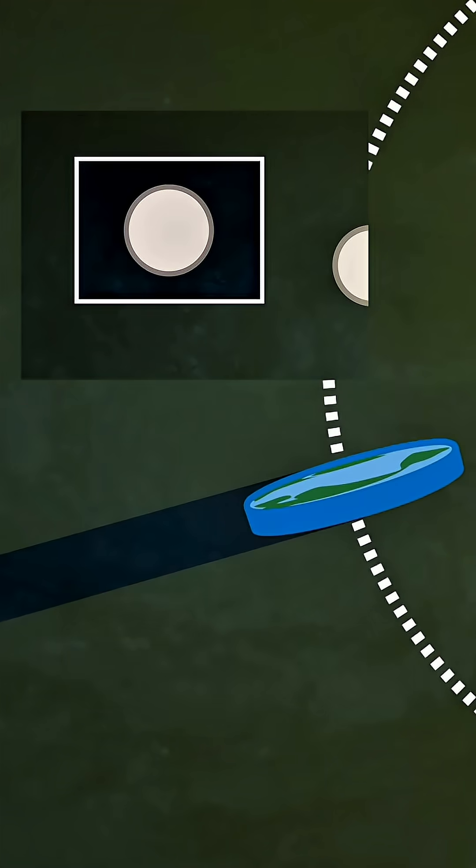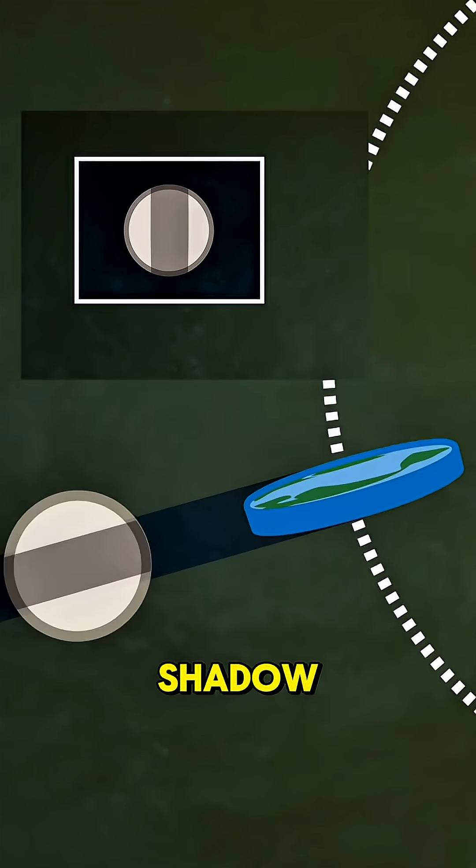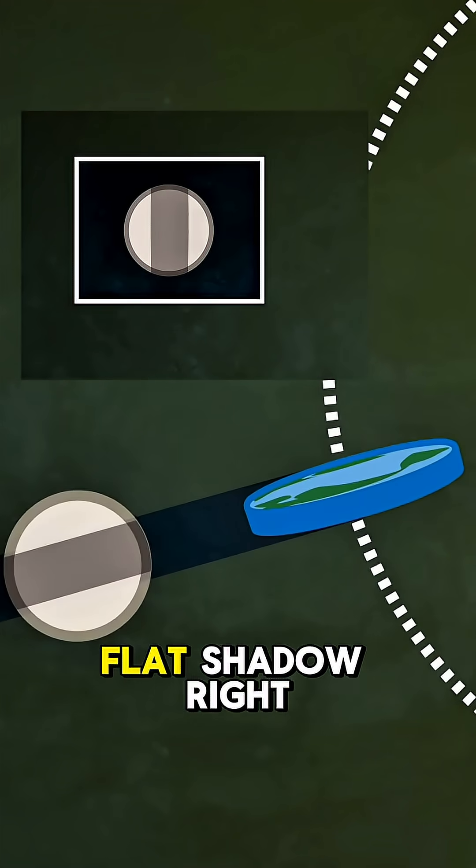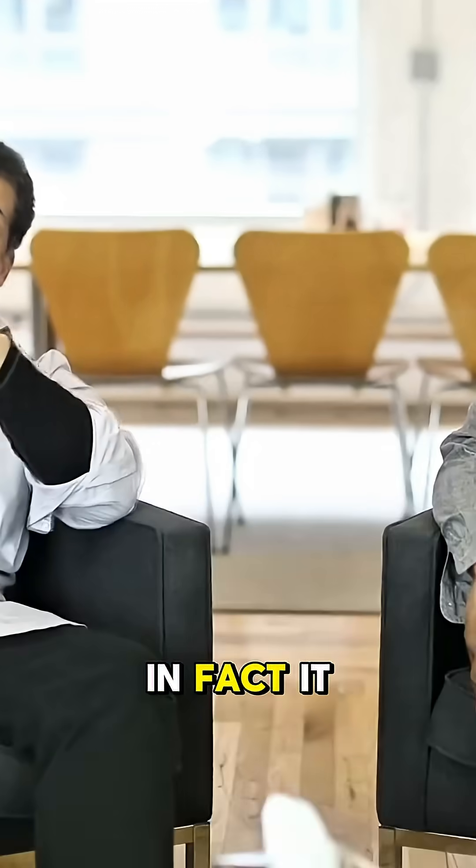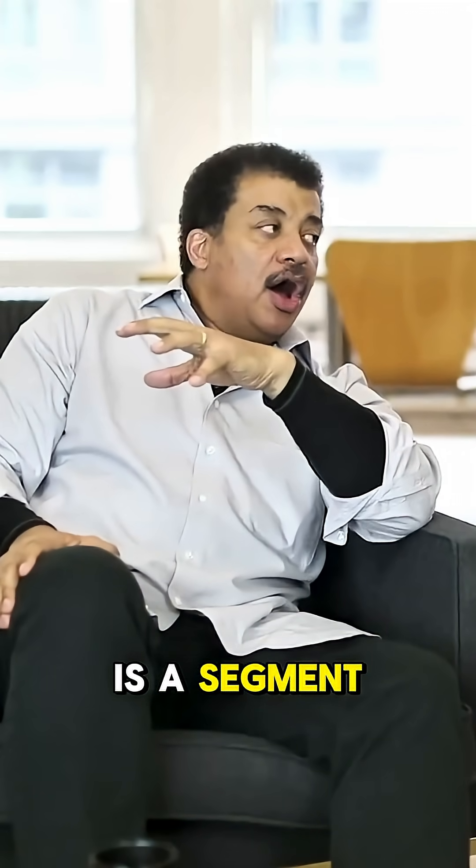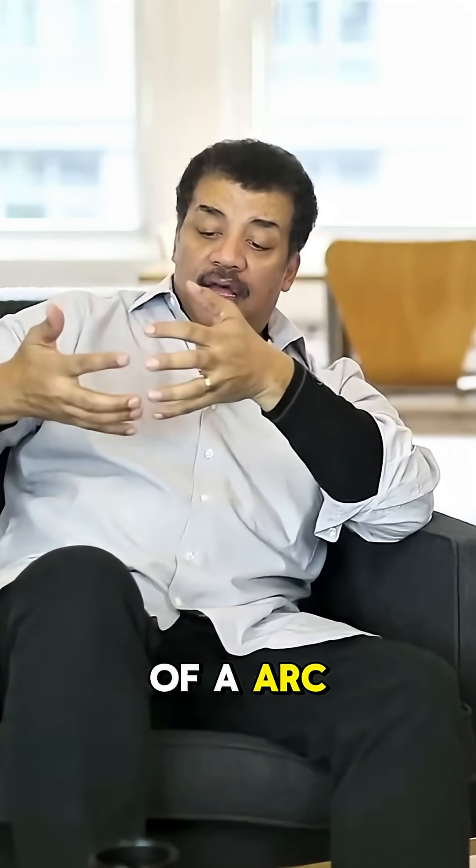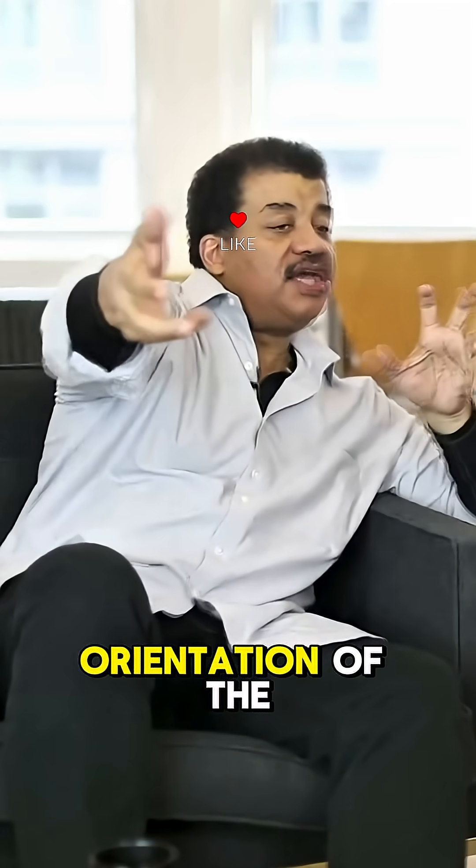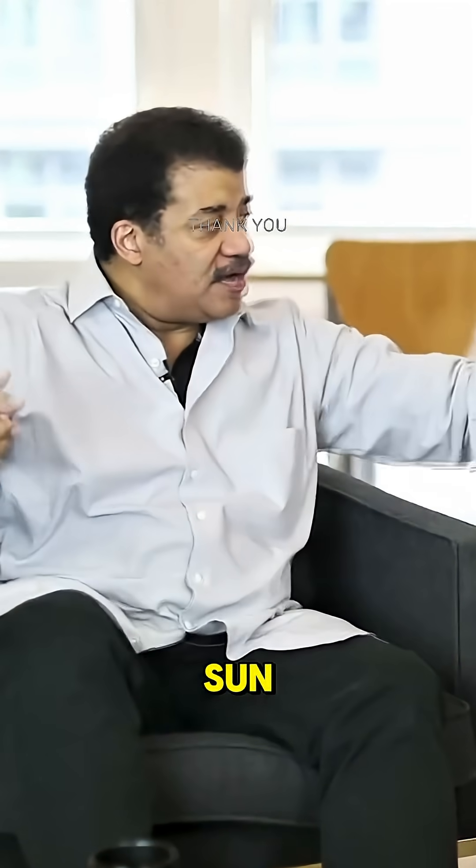If Earth were flat, sometimes you'd get like a flat shadow, right? We've never seen a flat shadow. In fact, it is a segment of an arc of a circle no matter the orientation of the moon and the sun.